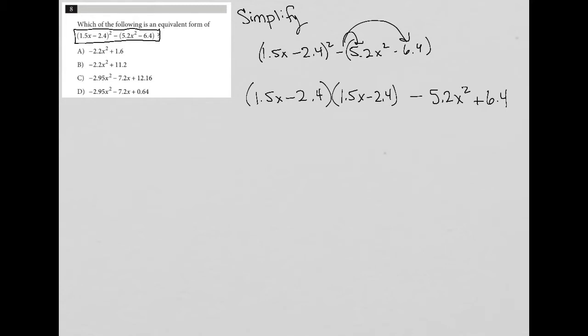So in my calculator, I'm going to just solve the FOIL question that I have here. So first is 1.5x times 1.5x. Well, that's 2.25x squared.